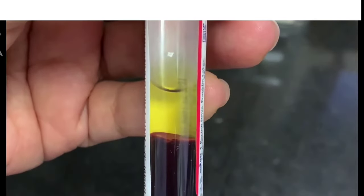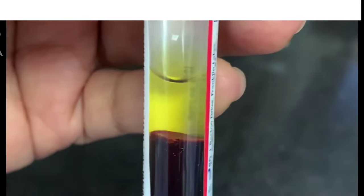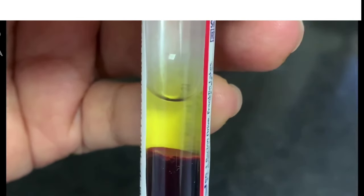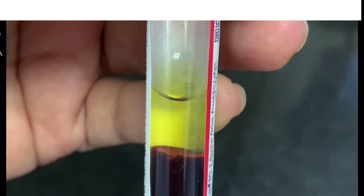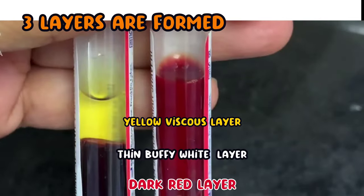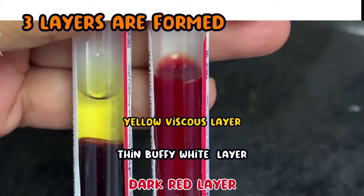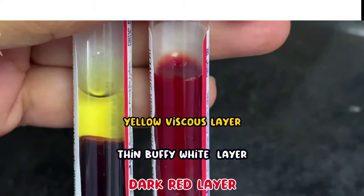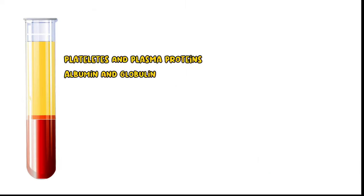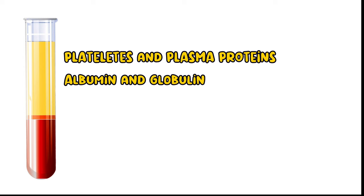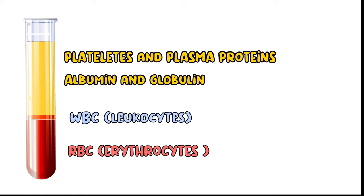After centrifugation, three distinct layers are formed. You can see a yellow viscous layer on top, and at the bottom you can see a dark red layer. The yellow viscous layer contains platelets and plasma proteins. The middle layer consists of WBC and the bottom layer consists of RBC.